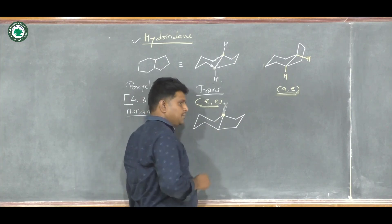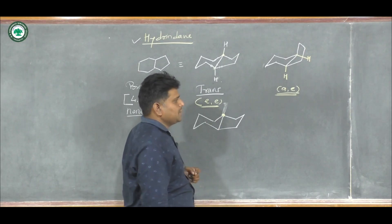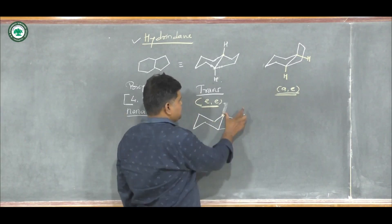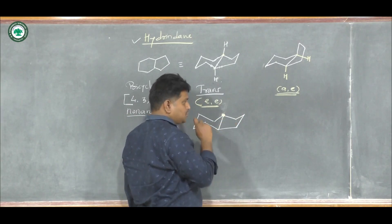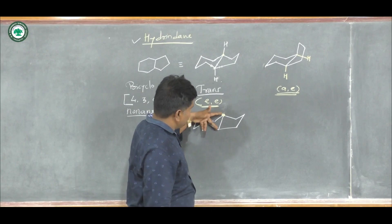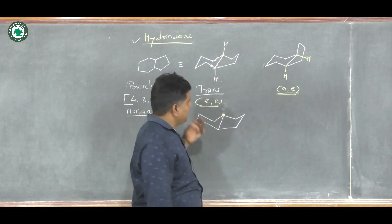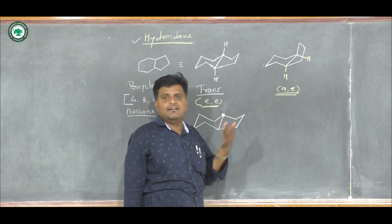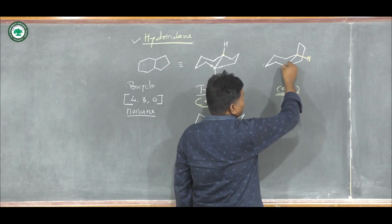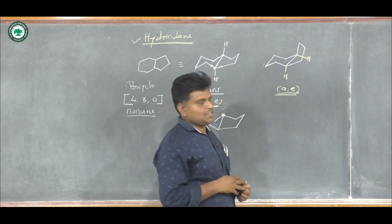This dot gives us information about the position of the hydrogen atom present on that carbon. The dot indicates that the hydrogen is present at the beta axial position — meaning it is above the plane. Where there is no dot, we assume that hydrogen is alpha axial — below the plane. So if one carbon has a dot and the other does not, we say this is trans fusion. If both carbons are represented by a dot, we call it cis fusion, because both hydrogens are on the same side.